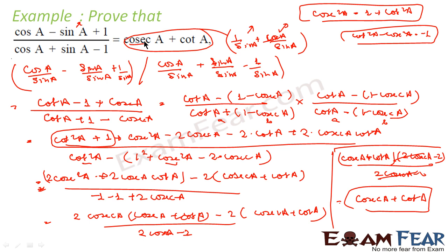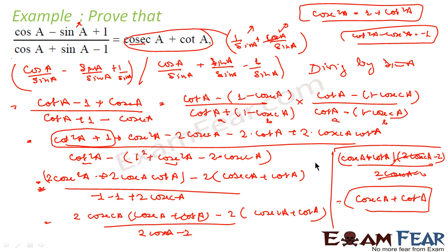This is a very tricky question — please pay attention to what we have done and why. The RHS had cosec A and cot A, which are 1 by sin A and cos A by sin A. So we divided everything by sin A. This converted the LHS to cot A minus 1 plus cosec A over cot A plus 1 minus cosec A. Then we rationalized, used cosec²A = 1 plus cot²A, made everything in terms of 2, and cancelled to get the result.